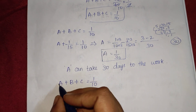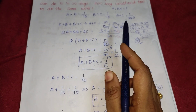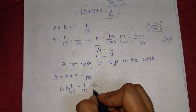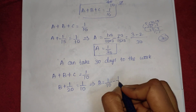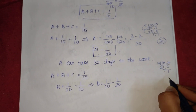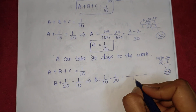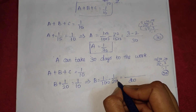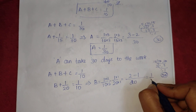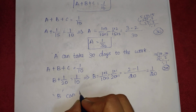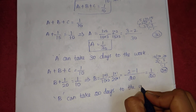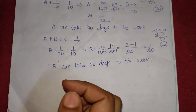Now for B, we take A plus B plus C minus A plus C: that is 1 by 10 minus 1 by 20. The LCM of 10 and 20 is 20. So we get 2 minus 1 over 20, which is 1 by 20. So B can take 20 days to do the work.